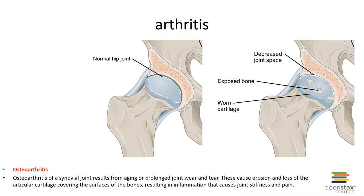Rheumatoid arthritis is an autoimmune disease that can occur at any age but is more common in middle-aged women. Infection, genes, and hormone changes may be linked to this disease. Rheumatoid arthritis usually affects joints on both sides of the body equally, and often begins slowly with only minor pain but can progressively become very debilitating.